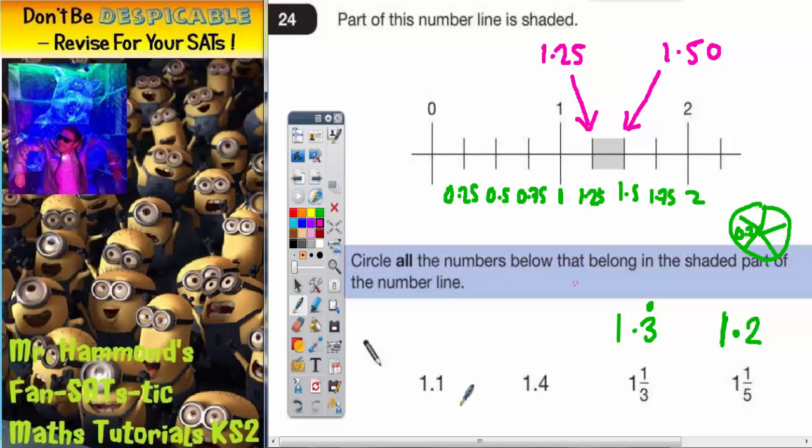If we go down to the numbers we've got, to make them all have two digits after the point, that will need to have a 0. 1.4 will become 1.40. 1.3 recurring would become 1.33. And 1.2 will become 1.20.